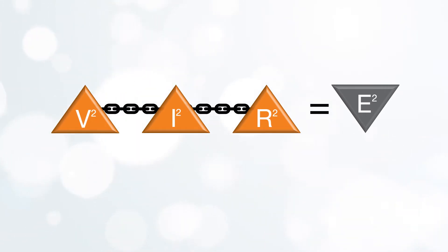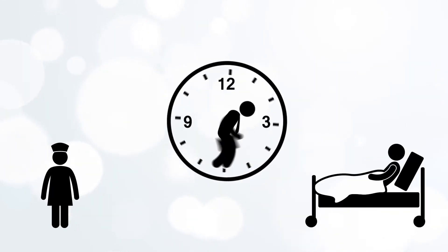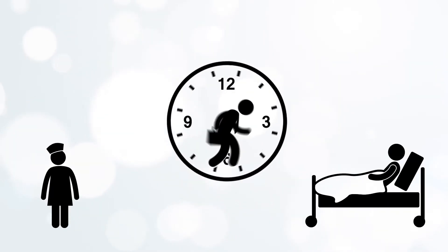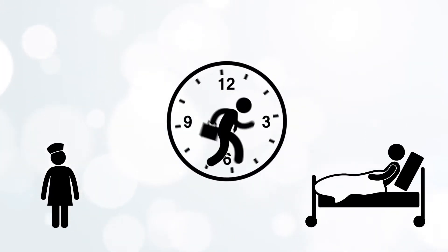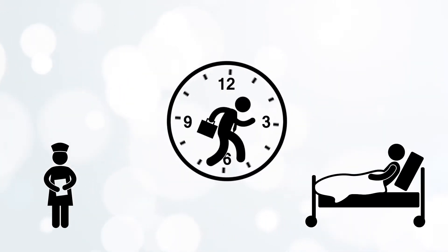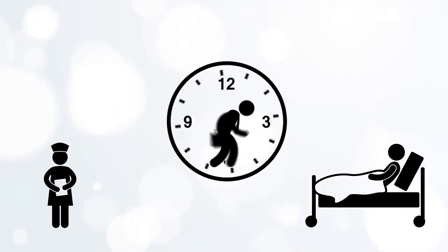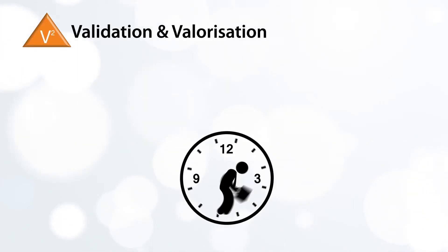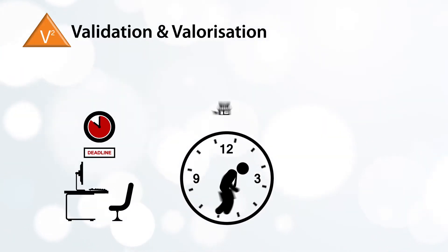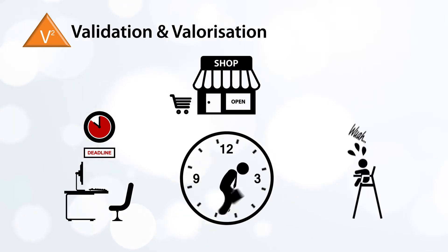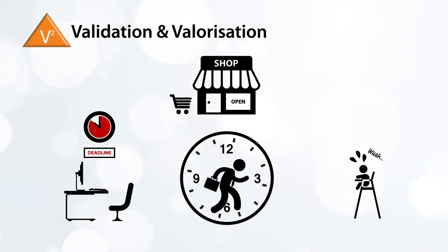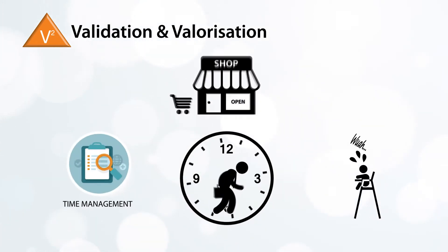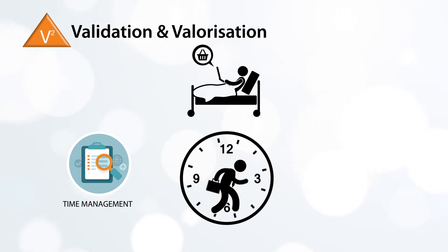A practical example: a district nurse notices that informal care is under stress. The V² domain investigates the symptoms and reasons for this. A diagnosis is then reached, followed by research and identification of actions to reduce the stress.